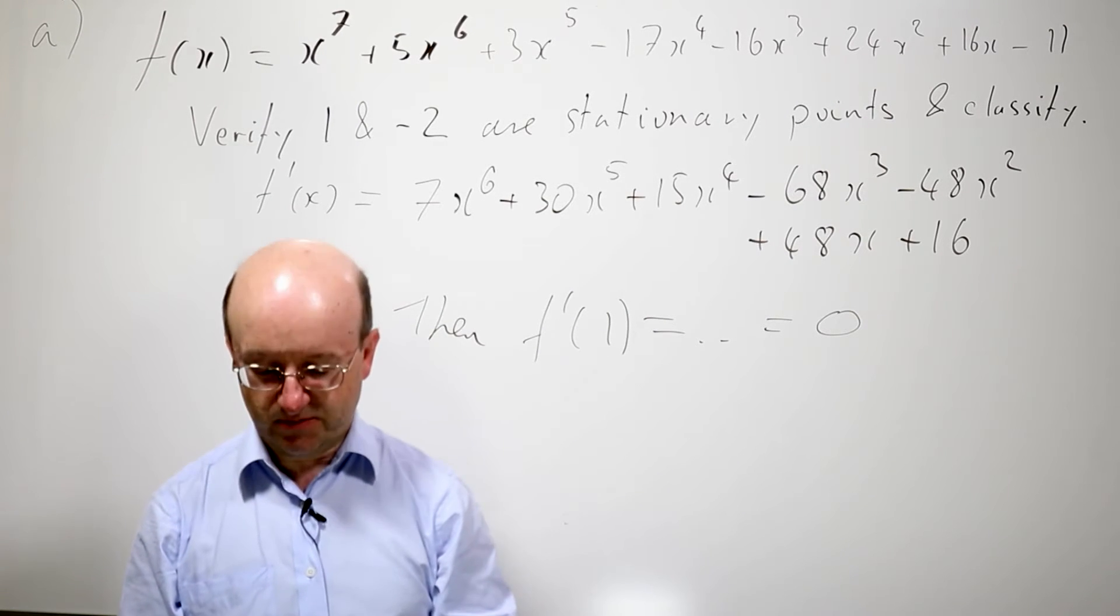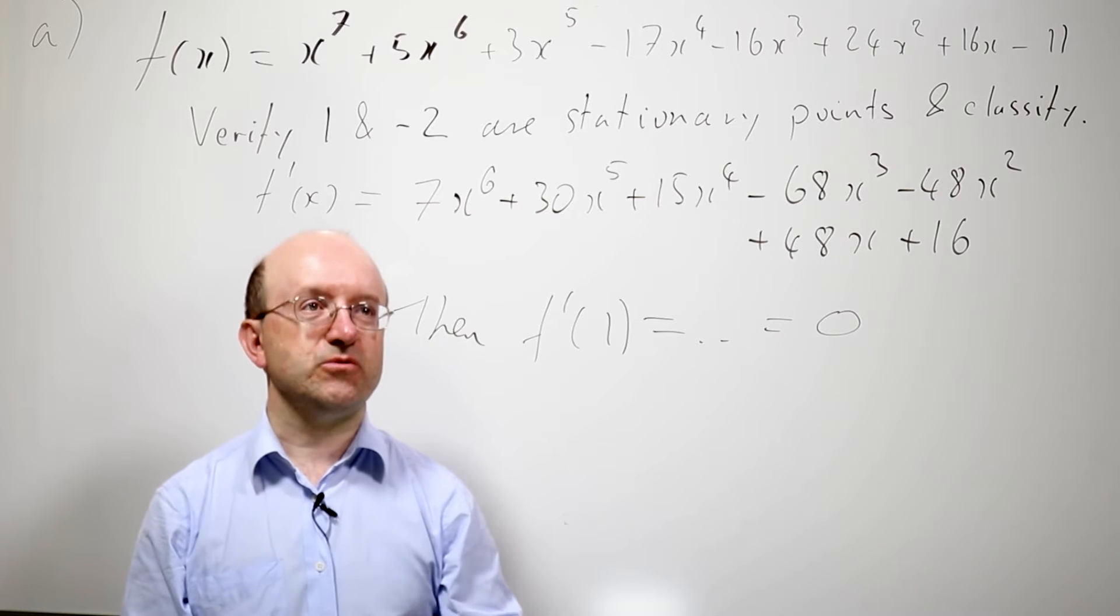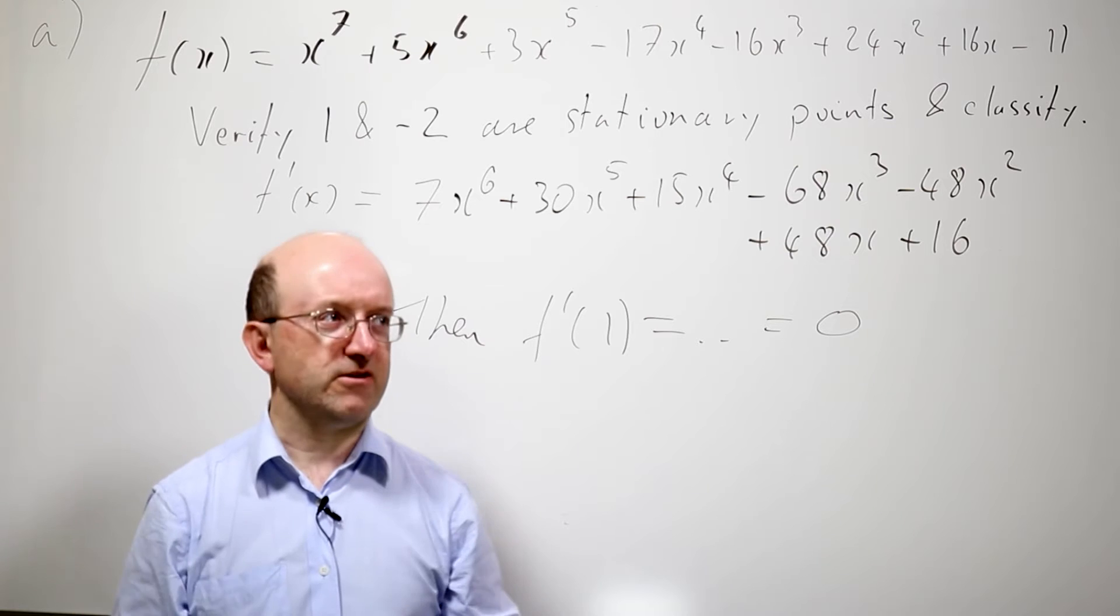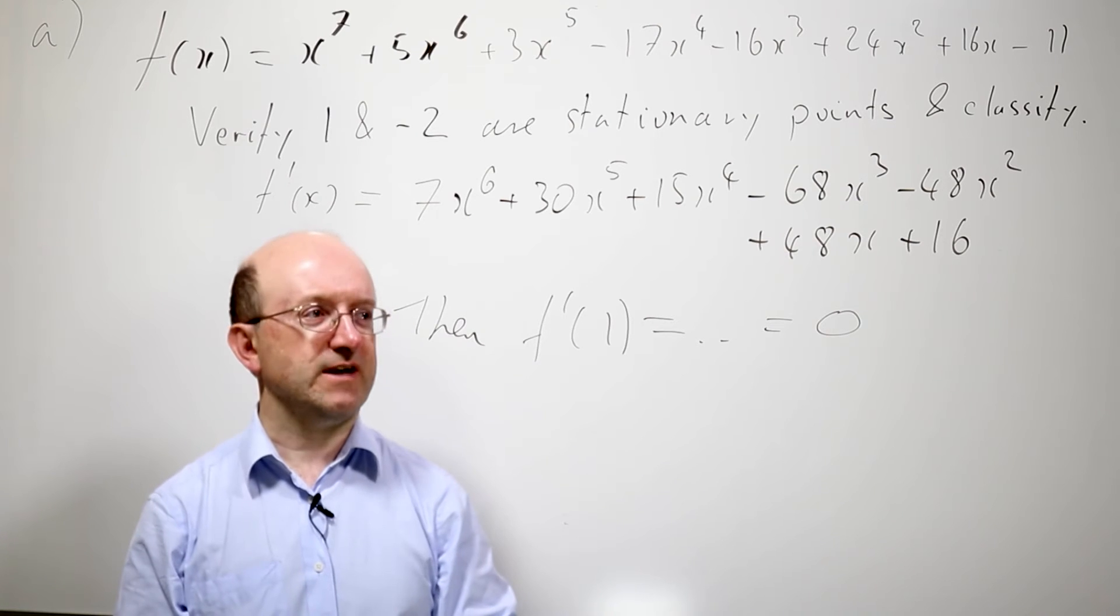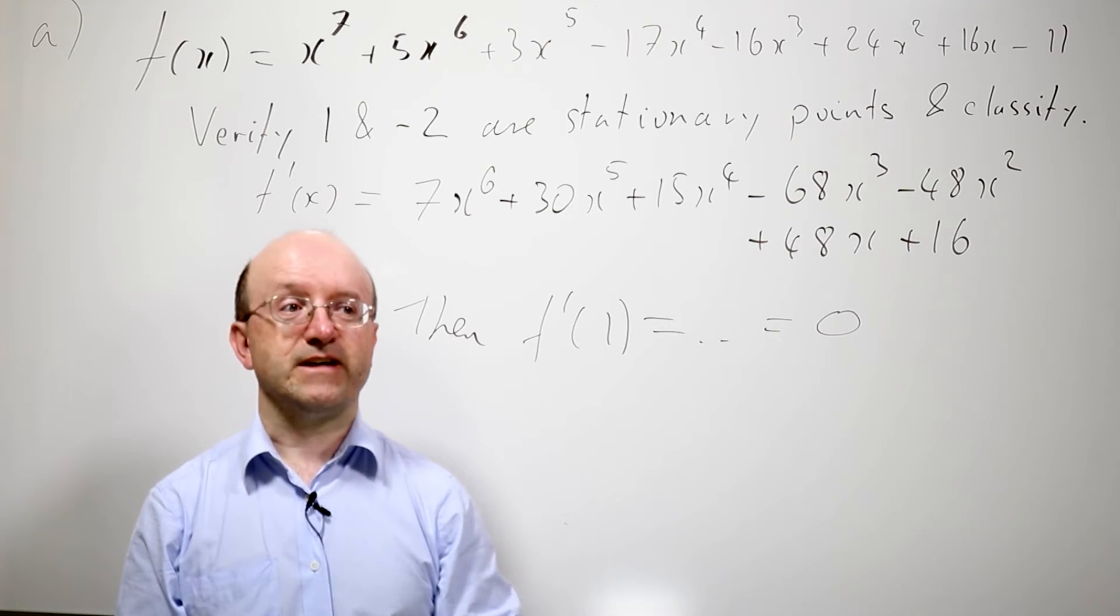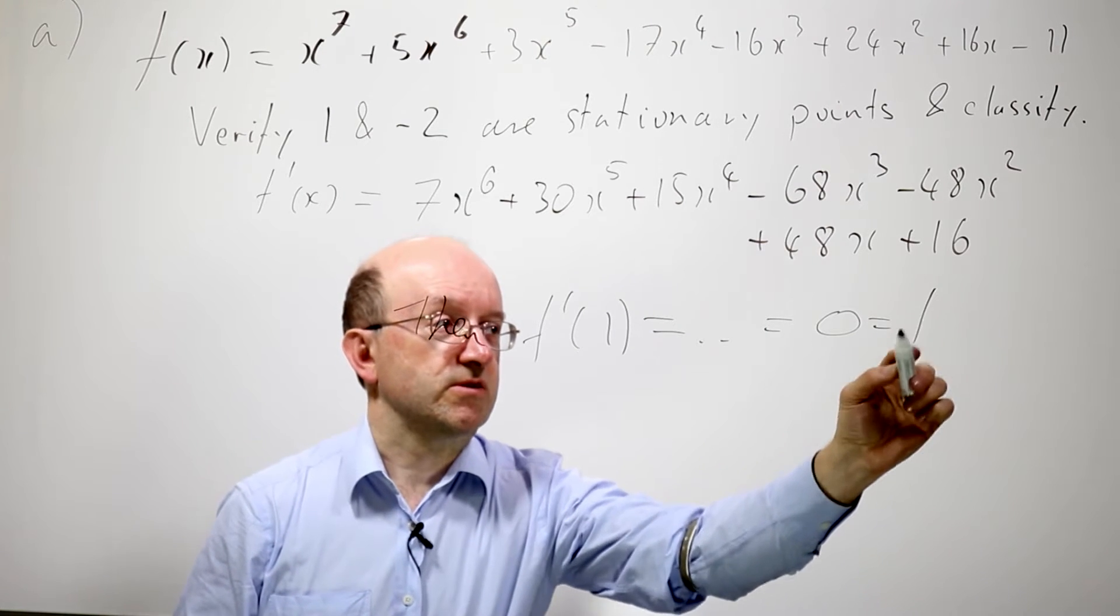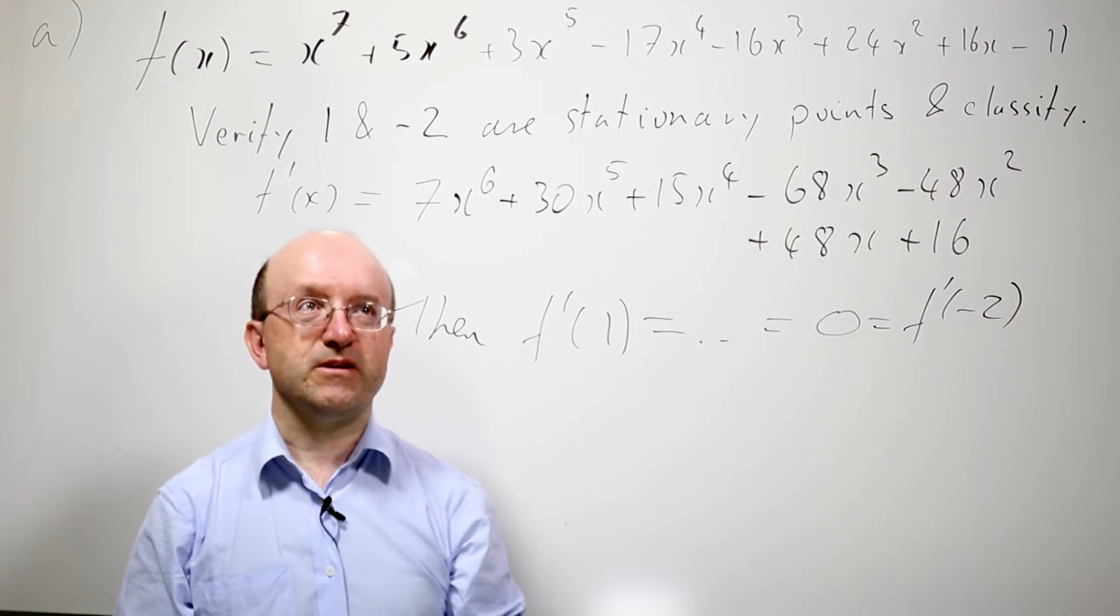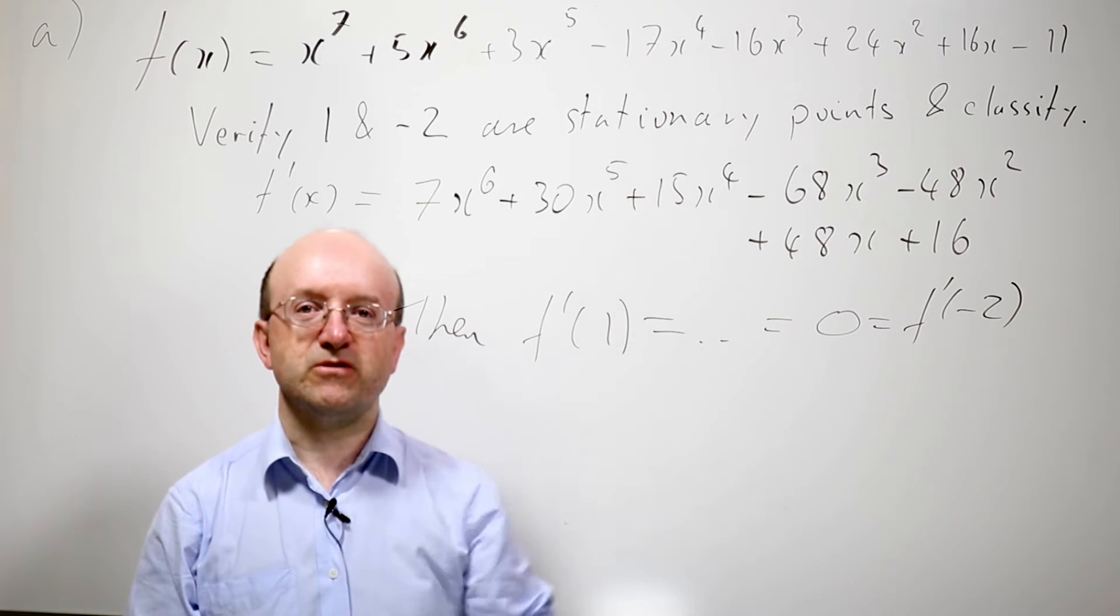And then you've got to evaluate the polynomial at minus 2. It's a bit more complicated. Use Maple, Mathematica, your calculator, synthetic division, whatever method you happen to have been taught. And if you do that, you again find that F dashed at minus 2 is also 0. So this is confirming that 1 and minus 2 are stationary points, the derivative vanishes.